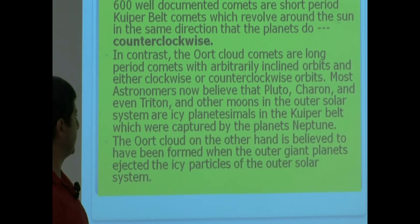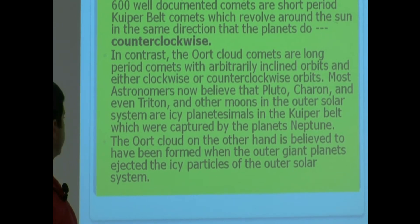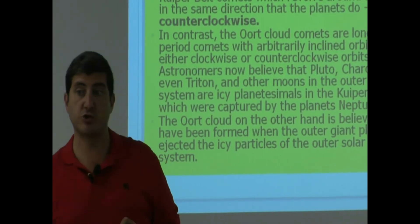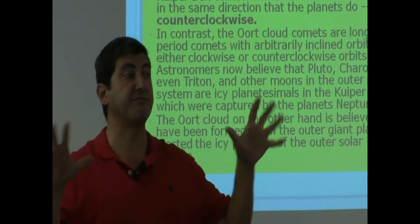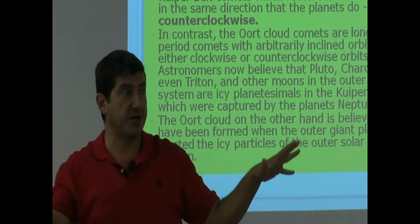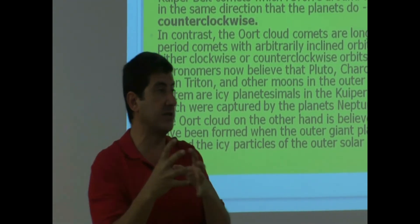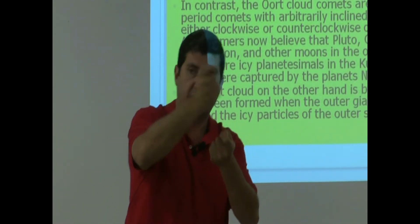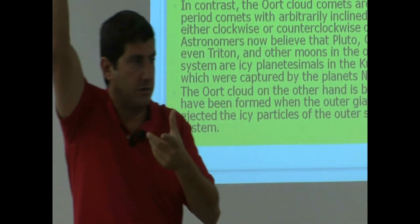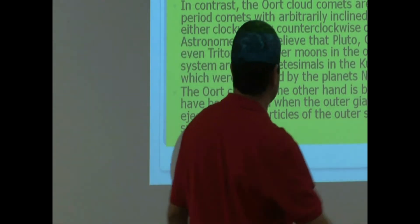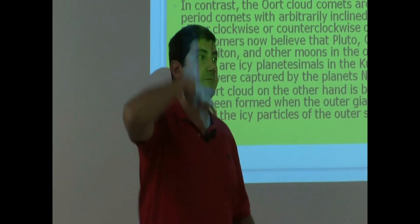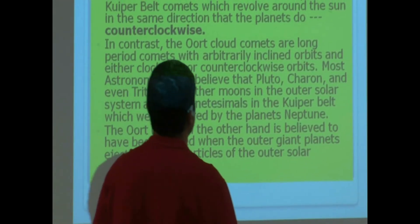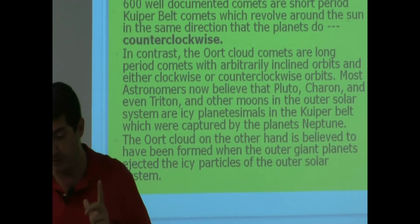The Oort cloud, on the other hand, is believed to have been formed when the outer giant planets ejected the icy particles of the outer solar system. So this is kind of an interesting theory. We think that the Oort cloud may not have been there at the beginning. It was just free of particles. But then these giant planets like Neptune, Uranus, took these little icy particles that were in the outer solar system and they flung them out. They flung them out to the Oort cloud. And then every once in a while, something perturbs their orbit, and they come towards the sun. And then their orbit lasts more than 200 years.